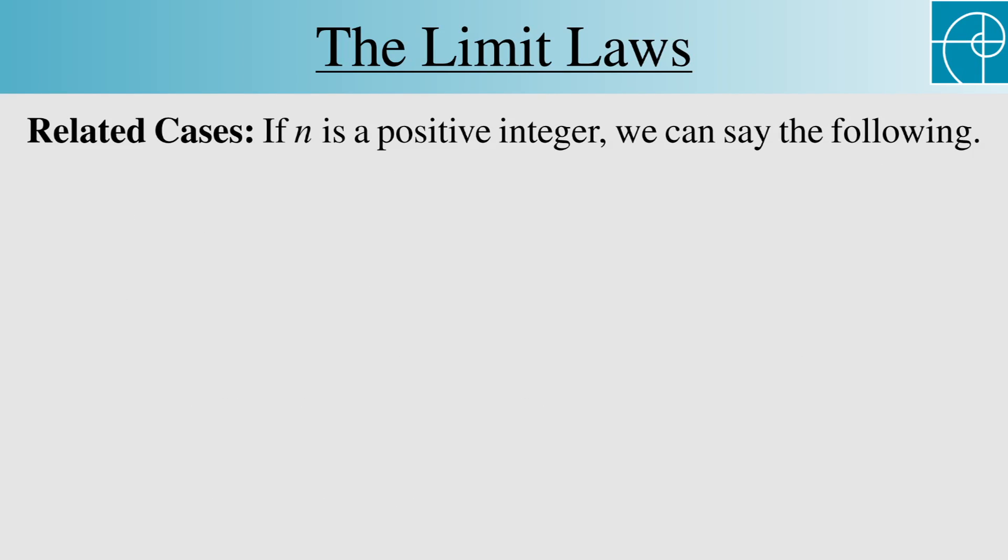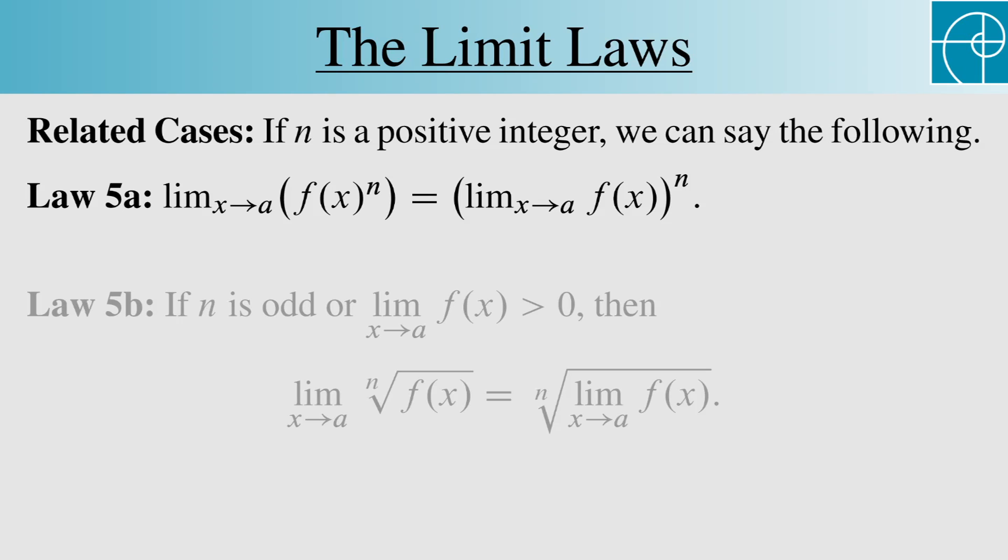There are two related cases, which aren't really special cases of law 5 since we're changing the assumptions, but they both deal with exponentiation. We're assuming that n is a positive integer. Law 5a says that we can distribute a limit inside an exponent of n. Law 5b says that if n is odd or the limit of f is positive, then we can do the same thing with an nth root.